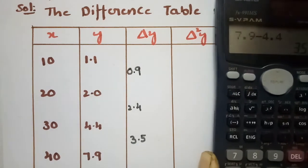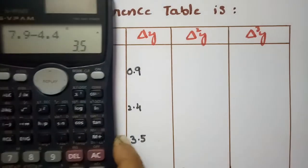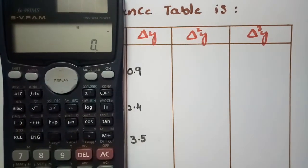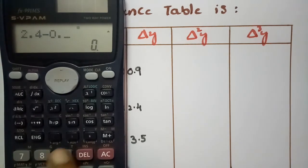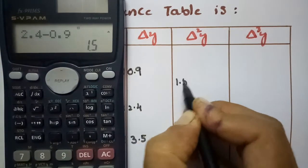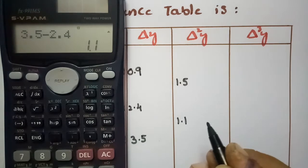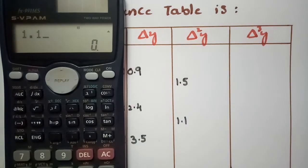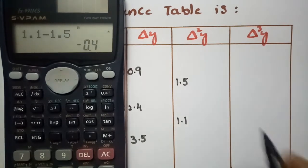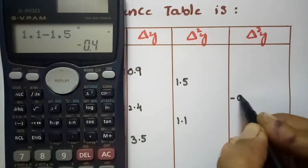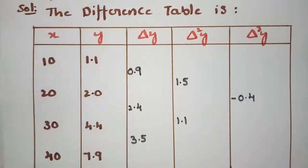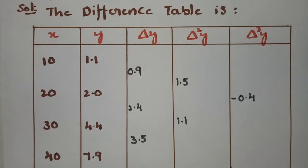The second differences are: 2.4 − 0.9 = 1.5, and 3.5 − 2.4 = 1.1. The third difference is 1.1 − 1.5 = −0.4. This completes our difference table.